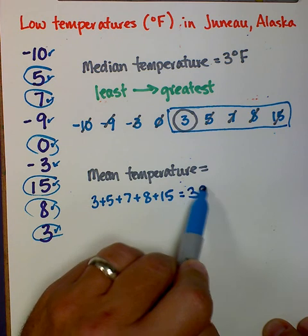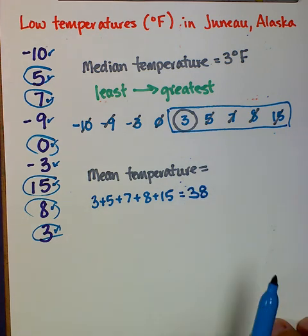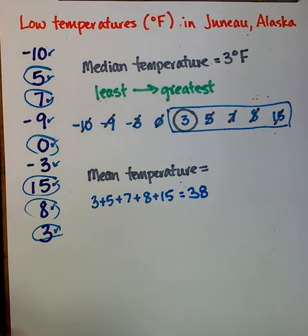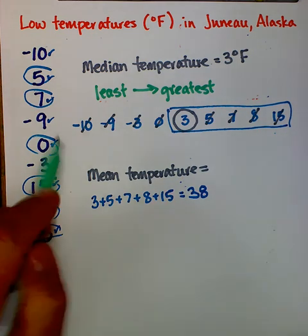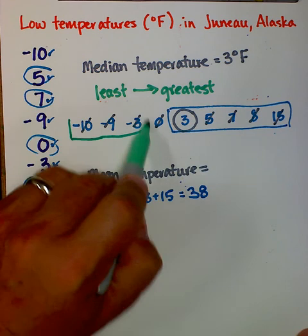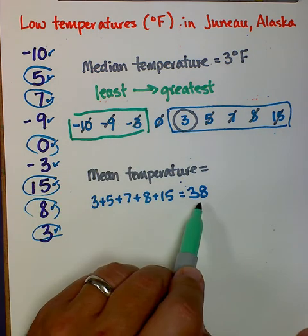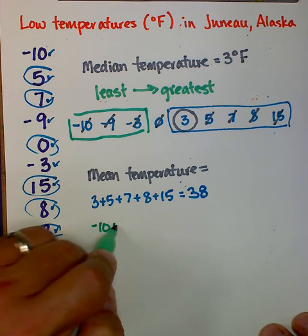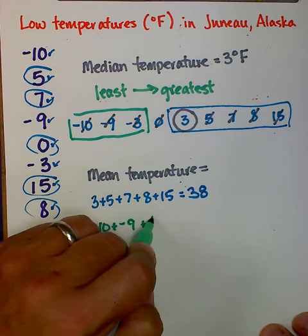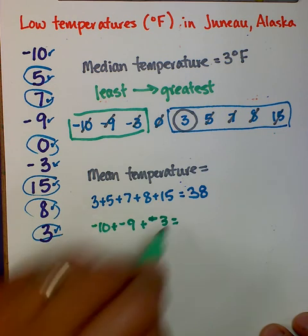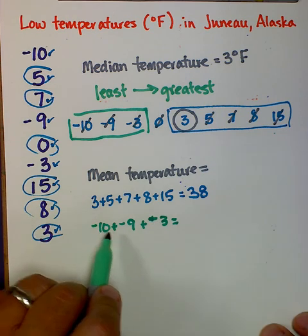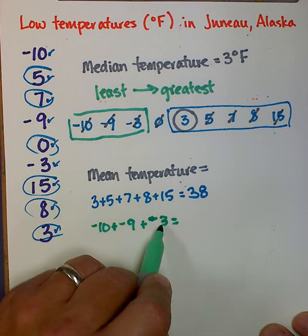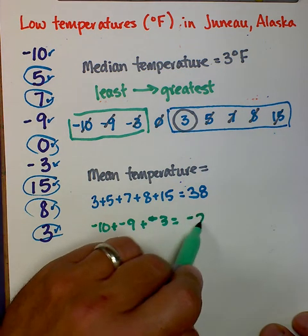Now I'm going to take all of my negative temperatures and add those to my positive sums. So I have negative 10 plus negative 9 plus a negative 3. So negative 10 plus negative 9 is negative 19, plus a negative 3 is negative 22.